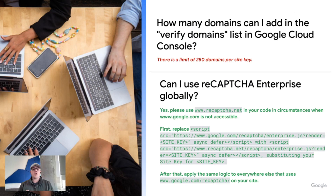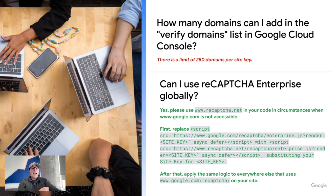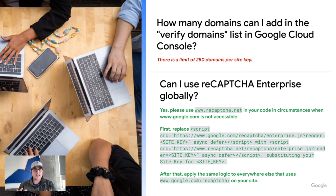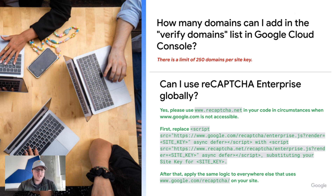I want to cover a couple of those FAQs while we have time. For example: how many domains can I add in the verified domains list within the Google Cloud console? As it stands today, there's currently a limit of 250 domains per site key. The next question is: can I use ReCAPTCHA Enterprise at a global level? Yes, you can — we've already got a script written for you, you just need to replace the existing script and then apply that logic everywhere else on your site. That in itself is pretty straightforward.